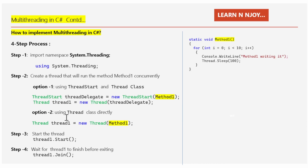Option two — we can create a thread directly using the Thread class: 'Thread thread1 = new Thread(methodOne)'. We supply the method name directly in the Thread constructor. Either way, we get a thread1 object of the Thread class. Step three: we need to start the thread by calling the start method — 'thread1.Start()'. Step four: we need to wait for thread one to finish before exiting. For that, we use the join method — 'thread1.Join()'. Now let's switch to Visual Studio and see all these things in action.